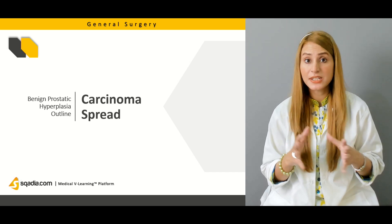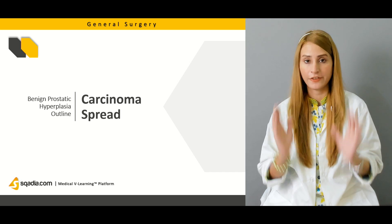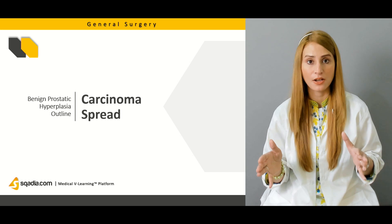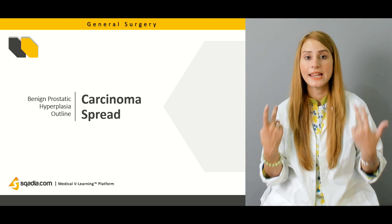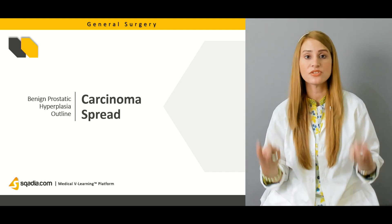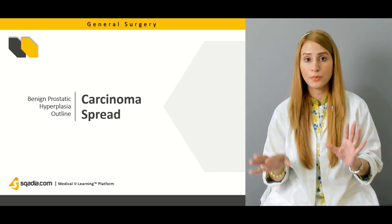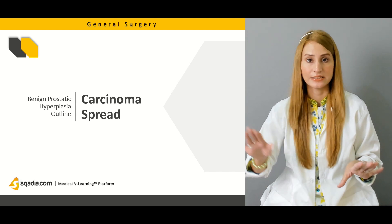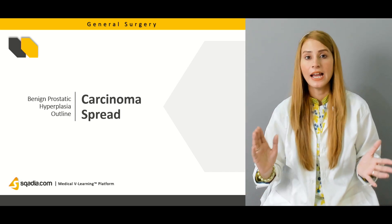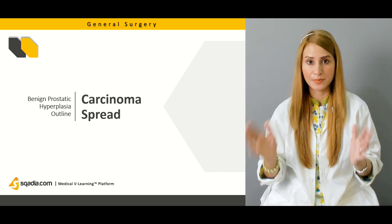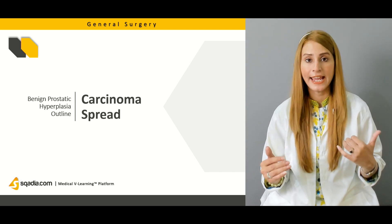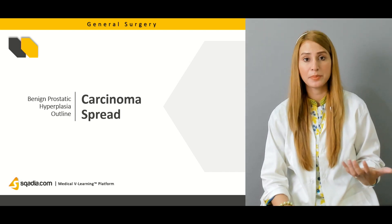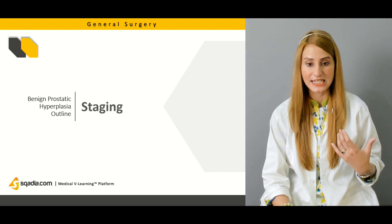Then we will be discussing carcinoma spread, which is very important to know because there are three important pathways by which the carcinoma spreads: local spread, through the bloodstream, and through the lymphatics. Carcinoma spreading through the bloodstream involves the vertebral column — particularly the lower lumbar vertebrae — as well as the pelvic bones, ribs, and femur. We'll be discussing carcinoma spread in detail.